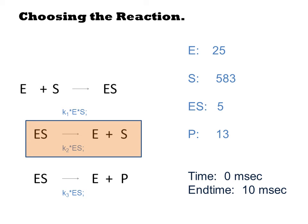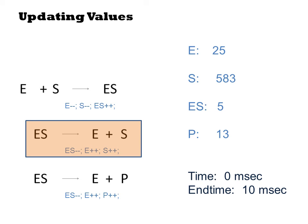If this reaction occurs, then I need to examine my update matrix to see what happens to the species. For reaction 2, ES decrements, and E and S go up 1. So my new values are 26 for E, 584 for S, 4 for ES. I'll also now update my time to a randomly chosen next value, say 4 milliseconds.